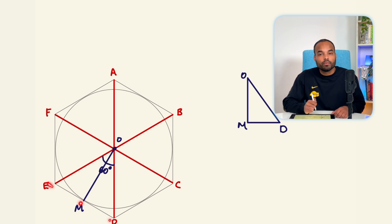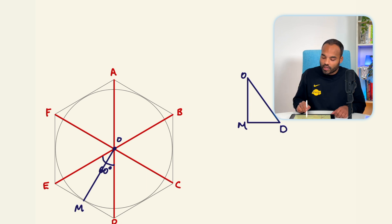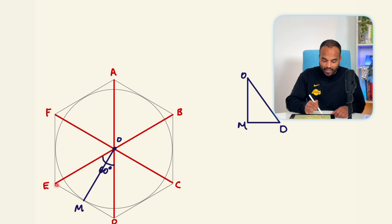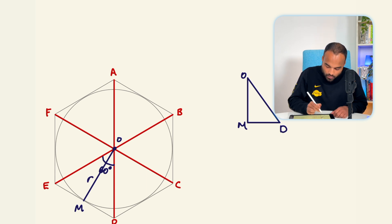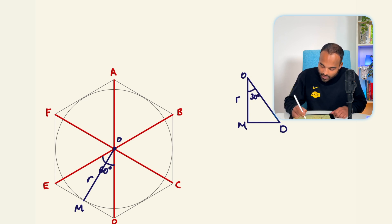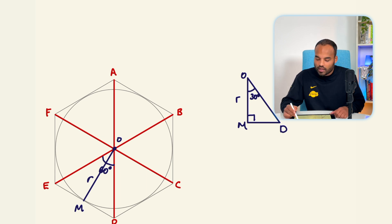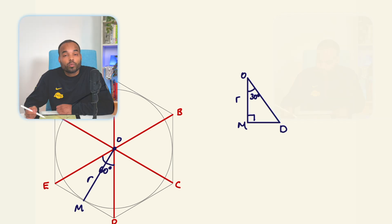From circle theorems, where a tangent meets a radius, a 90° angle is formed. ED is a tangent and OM is a radius, so the angle at M is 90°. Since OM bisects the 60° central angle, the angle at O in the right triangle is 30°, and the remaining angle is 60°. EM equals half of ED, so if we find MD we can double it to get one full side of the outer hexagon.